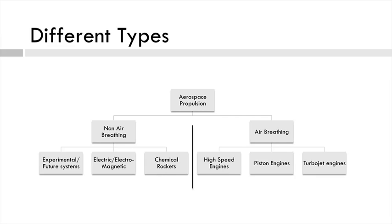Under air breathing we have high-speed engines, piston engines, and turbojets. Under non-air breathing we have experimental and future systems, electrical and electromagnetic, and chemical rockets. This is not an exhaustive list, but at this stage we'll consider these.